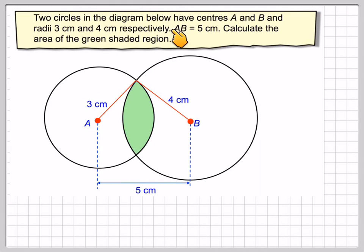Two circles in the diagram below have centres A and B and radii 3 centimeters and 4 centimeters respectively. AB, this distance here, is 5 centimeters. Calculate the area of the green shaded region.